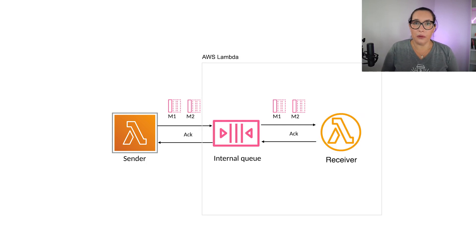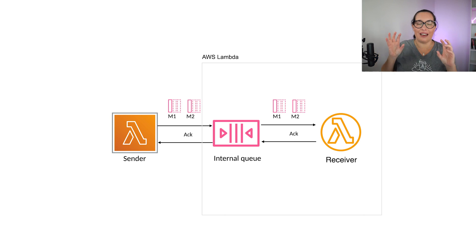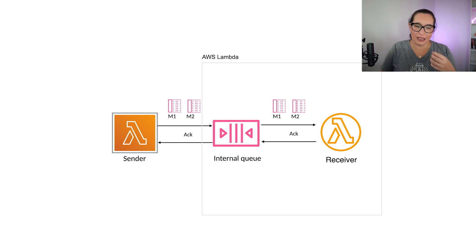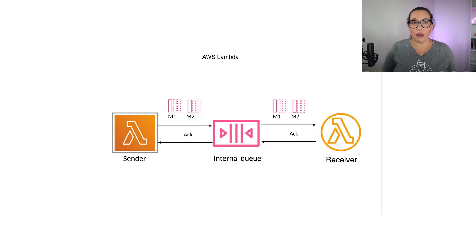Another way to use a queue — and this is something Lambda does internally — is to use asynchronous invocations. You can have a function that asynchronously calls another function. Lambda has an internal queue that you don't need to manage or create, which will handle retries and also has a dead letter queue if something goes wrong.